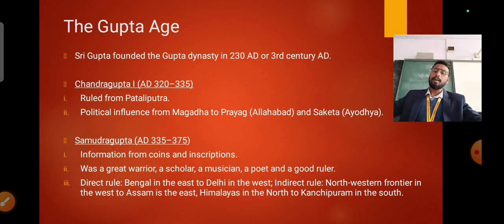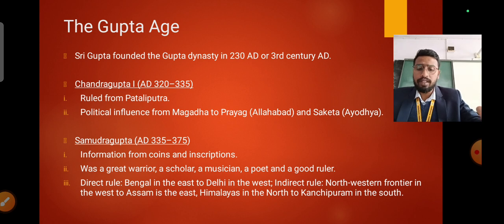After him Magadha again rose to prominence. He ruled from Patliputra and his political influence started from Magadha to Prayag and then to Saketa as well, which is Ayodhya. It covers a huge area. He remained in power till AD 335.